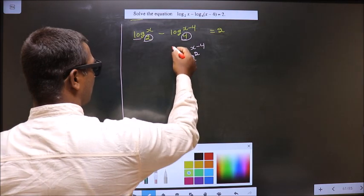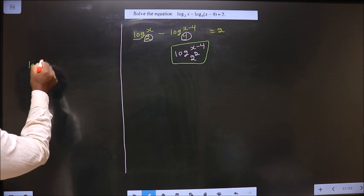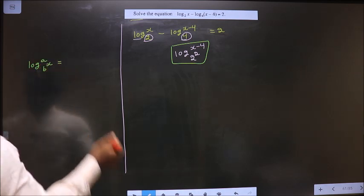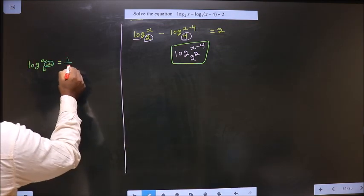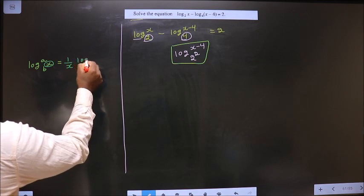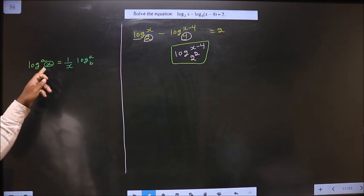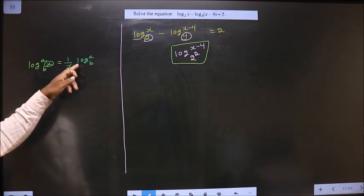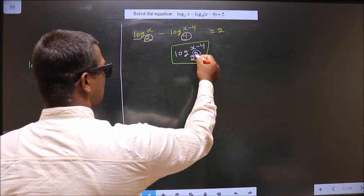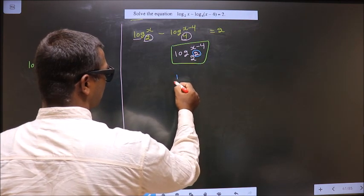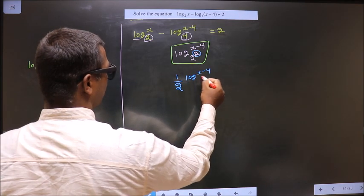Now I apply the formula for log base b-power-x of a: whenever the base has a power, that power comes into the denominator, giving log a base b. Here the power is 2, so it comes into the denominator, making it one-half times log(x minus 4) base 2.